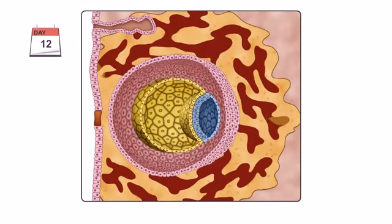This establishes a utero-placental circulation. The blood and uterine secretions only come into close proximity to the embryo, allowing the exchange of gases and metabolites.